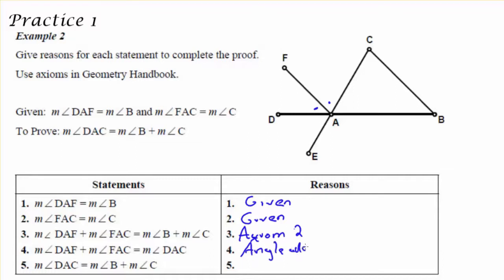My next statement, DAF plus FAC is equal to DAC, with two parts of that angle, I can then switch gears and use the angle addition postulate instead, since both parts of those angles will definitely equal the whole thing.